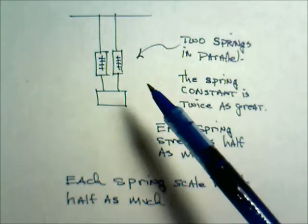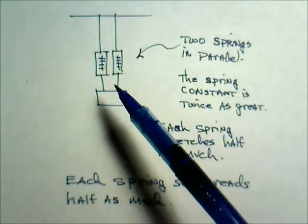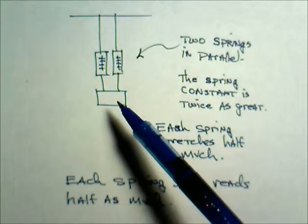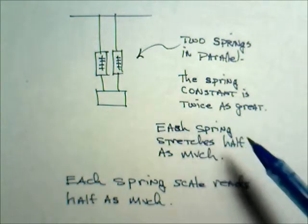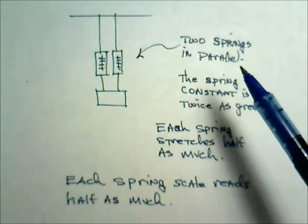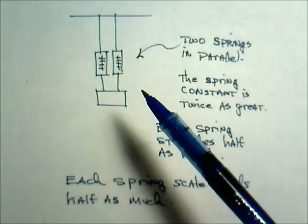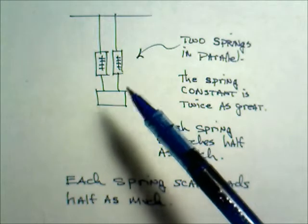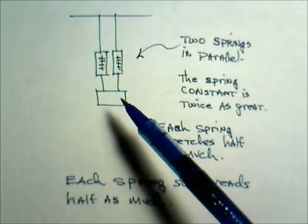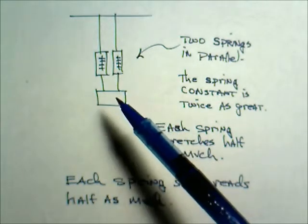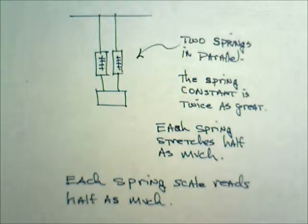Now this is logical because each spring is only supporting half of the weight. So what we learned about spring constants placing springs in parallel basically boils down to if we take two springs and we split the weight of the object between them then each spring is only supporting half the weight of the object.